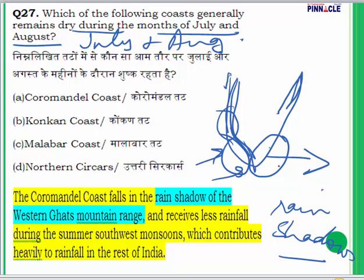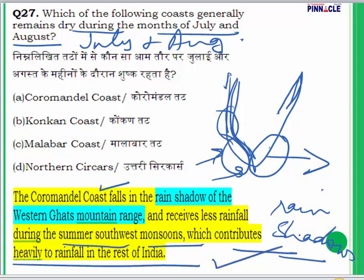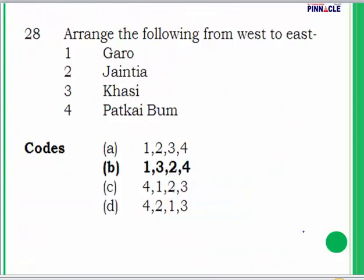Tamil Nadu is a state which receives rain during the winter months of November and December from the retreating monsoon. So the Coromandel coast falls in the rain shadow of the Western Ghats and receives less rainfall during the summer southwest monsoon, which contributes heavily to rainfall in the rest of India. The answer to question 27 is the Coromandel coast.